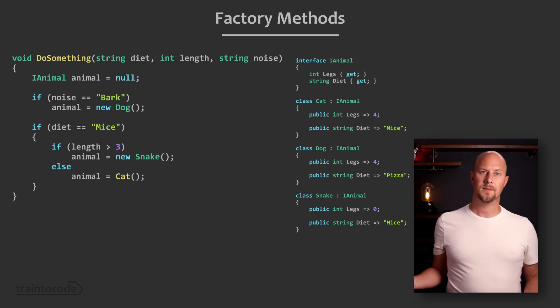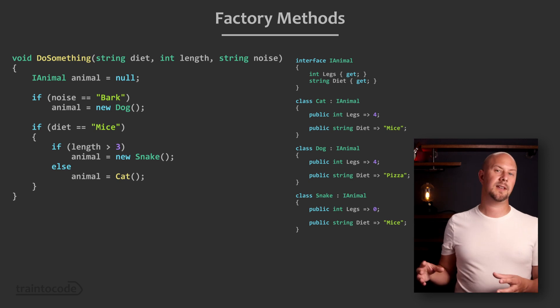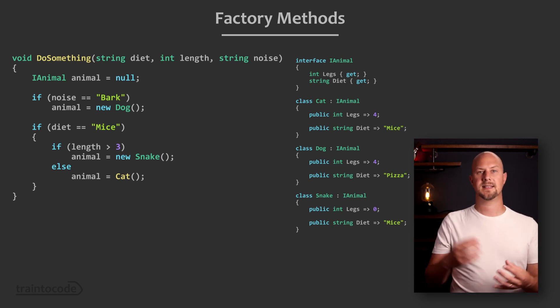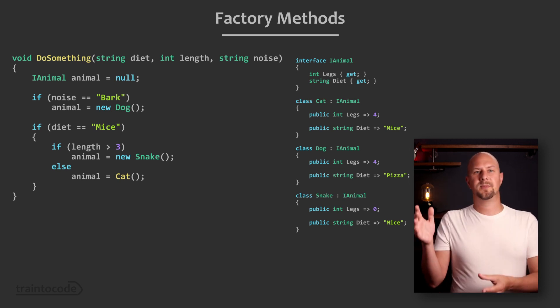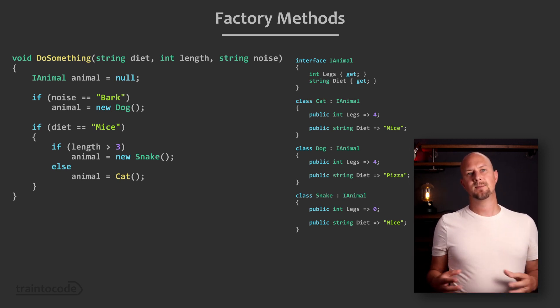If it eats mice then if it is longer than three feet it's a snake otherwise it's a cat. Something like that. Well this kind of which object do we create logic is what we're going to hide away behind the four walls of our factory.